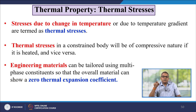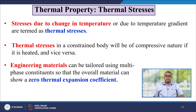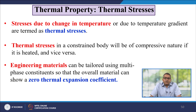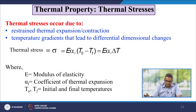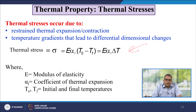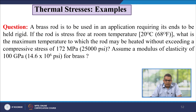Now let us talk about thermal stress. Stress due to the change in temperature or due to a temperature gradient is termed thermal stress. A constrained body will experience compressive stress if it is heated, or vice versa. Engineering materials can be tailored using multiphase constituents so that the overall material shows a zero thermal expansion effect. Thermal stress is attributed to restrained thermal expansion or contraction and temperature gradients that lead to differential dimensional changes. It is represented as σ = E × α × (T₀ − T), where E is the modulus of elasticity, α is the coefficient of thermal expansion, and T₀ and T are the initial and final temperatures.